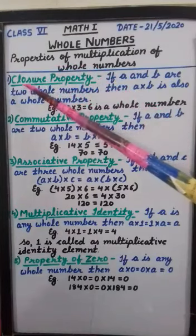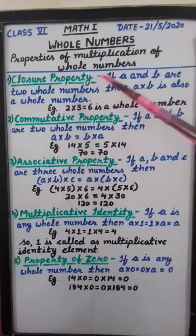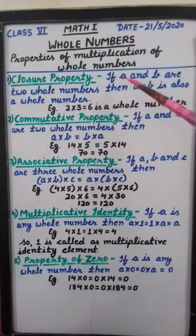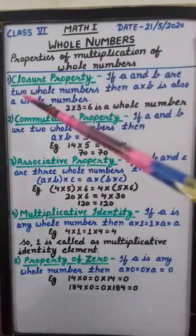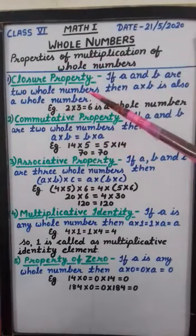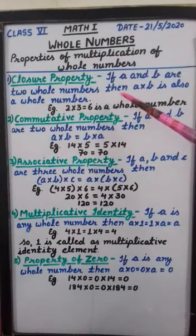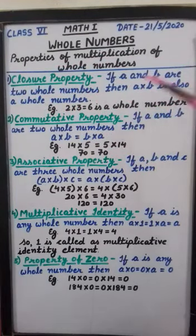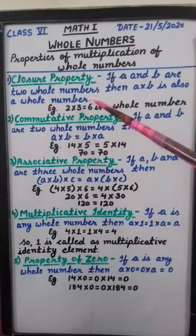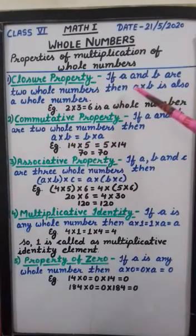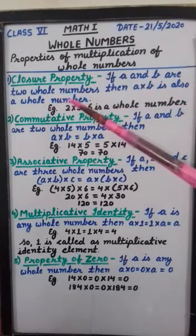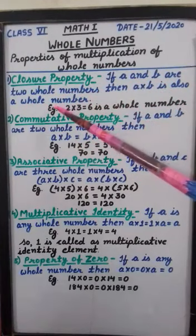Number 1: Closure property. If A and B are two whole numbers then A multiply by B is also a whole number. That means if we multiply two whole numbers, the result is also a whole number. Let's see this by one example.